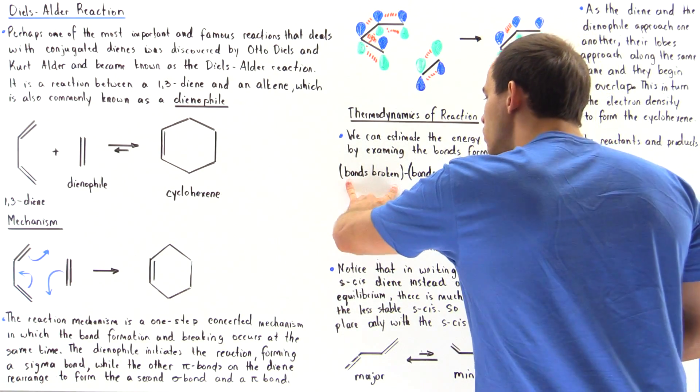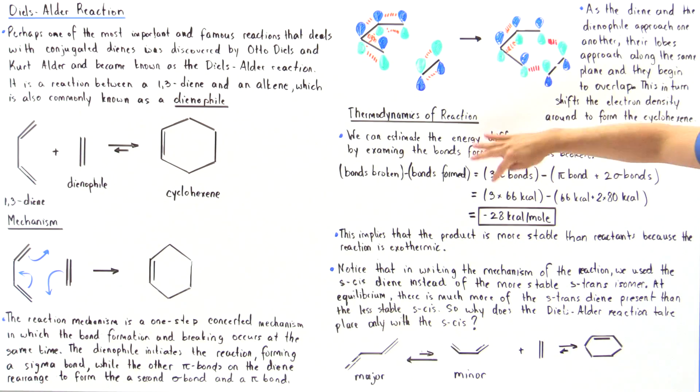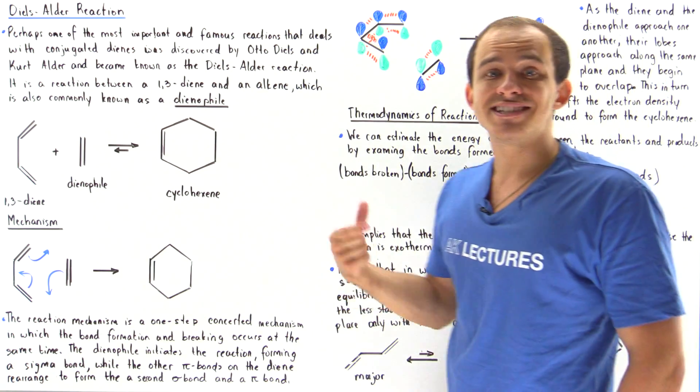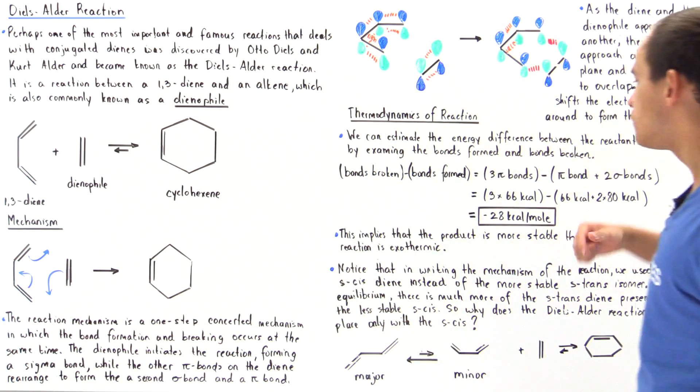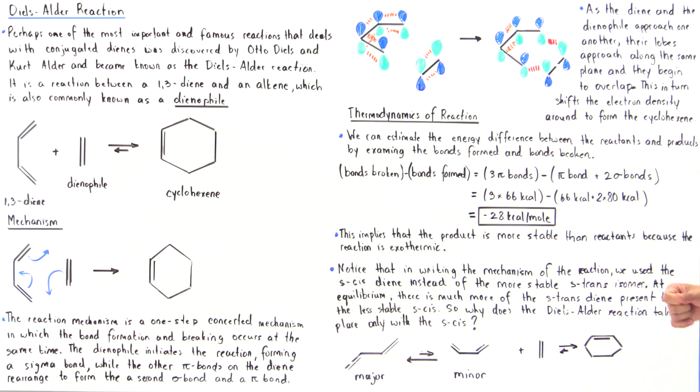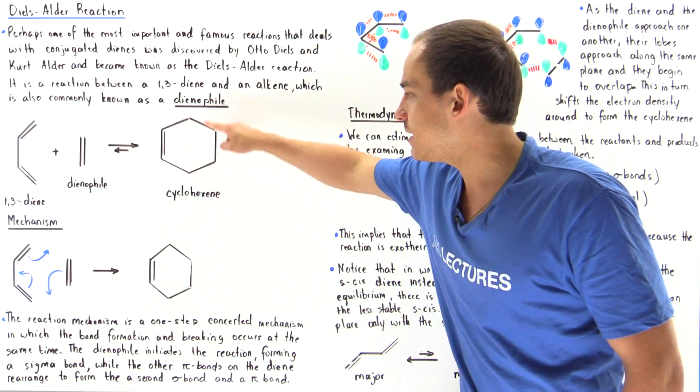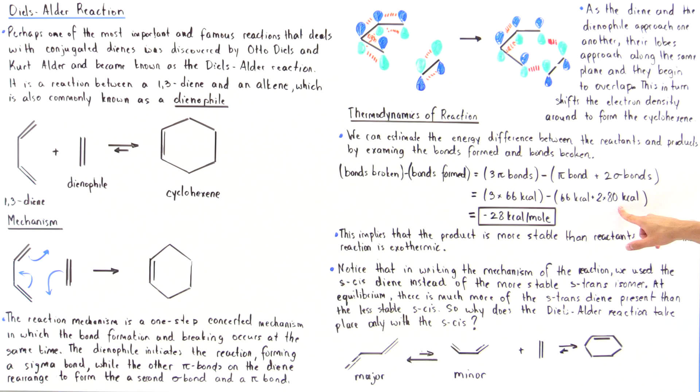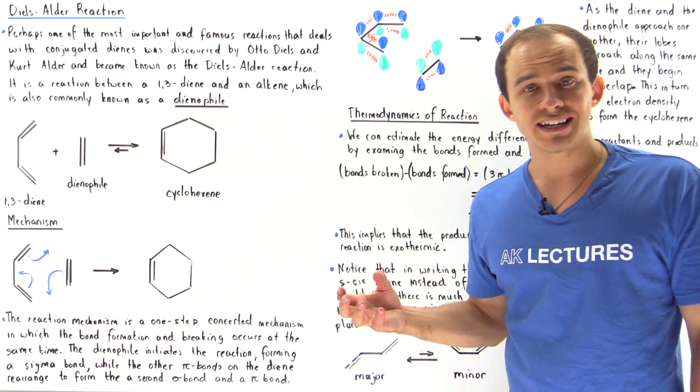The bonds broken is equal to the amount of energy found in three pi bonds. One pi bond carries 66 kilocalories per mole, so that's three multiplied by 66, which is 198 kilocalories of energy. In our formation we have one pi bond, so 66 kilocalories, and two sigma bonds. The sigma bonds in this cyclohexene have an energy of 80 kilocalories each, so two multiplied by 80 which is 160. We add 66 to that and then subtract that from 198, and we get negative 28 kilocalories of energy per mole.